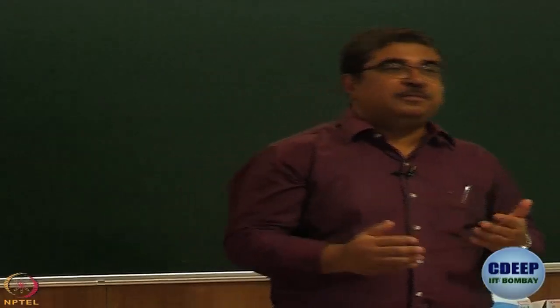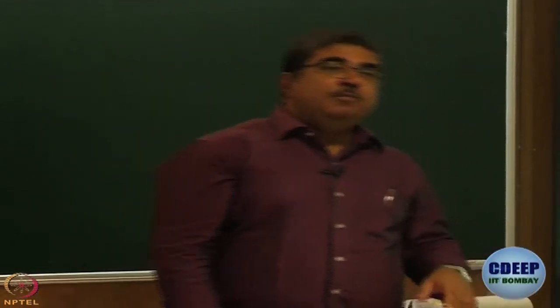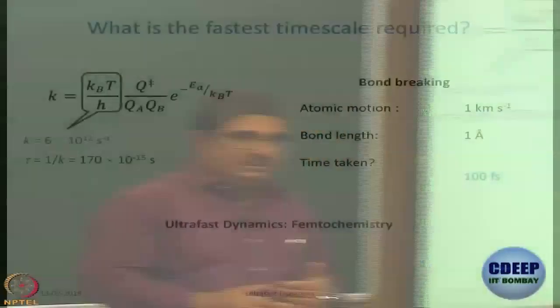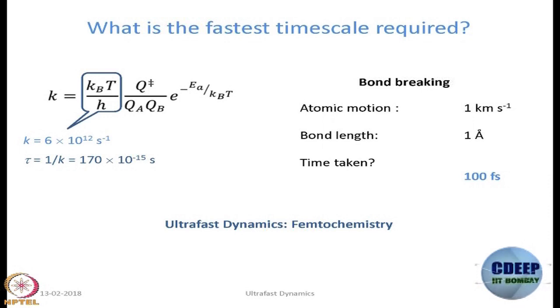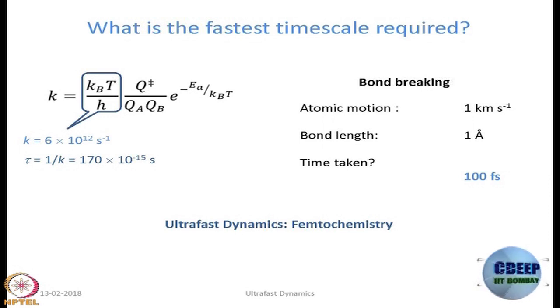This is where we had stopped yesterday. We had said that due to the properties of laser light — intensity, monochromaticity, pulsed operation, coherence, and directionality — you can do many kinds of spectroscopy that you cannot do without lasers. One of the things we ended with was that lasers can give you pulsed operation, so using lasers you can actually measure fast processes. The question we asked is how fast a process we need to measure in chemistry. Using the Eyring equation, we reached the conclusion that the fastest process in chemistry takes place in about 170 femtoseconds.